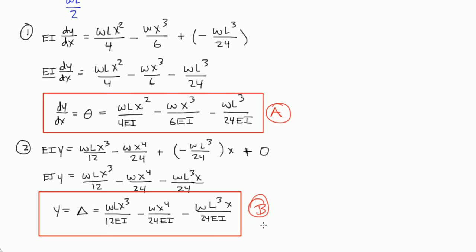So we used the double integration method to figure out our equations for our slope or our rotation at any point along span AB. And we also used it to find the deflection at any point along span AB.